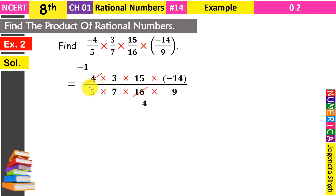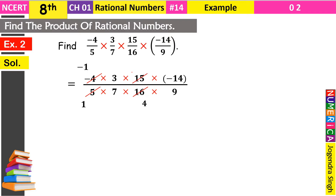अब हम choose करते हैं denominator का 5 और numerator का 15। यह दोनों 5 से divide होते हैं। Denominator का 5 को 5 से cut किया → 1 मिला। Numerator का 15 को 5 से cut किया → 3 मिला।